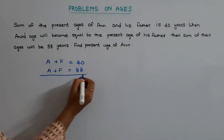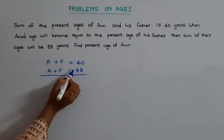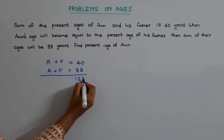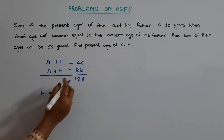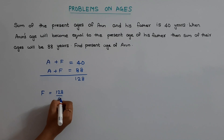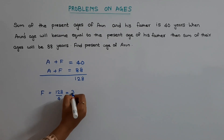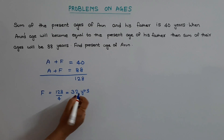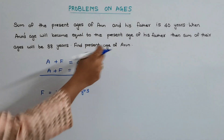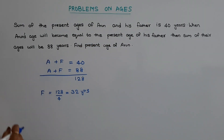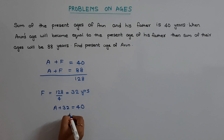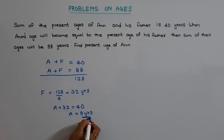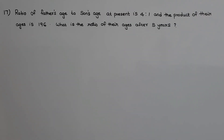First, let us find out the present age of the father. Take the sum of both sums: 40 plus 88 equals 128. Father's present age equals 128 divided by 4, which is 32. Father's present age is 32. We need to find Arun's present age, so substituting in the first equation: a plus 32 equals 40, so Arun's age equals 40 minus 32, which is 8 years.